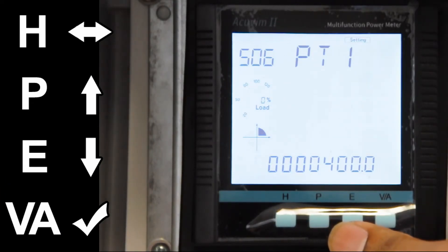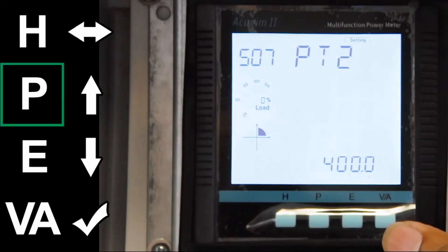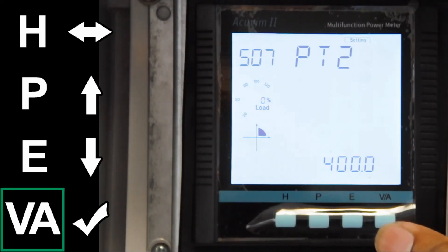To configure the secondary PT, press P to move to S07. To go into the setting, press VA or ENTER.